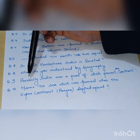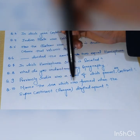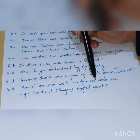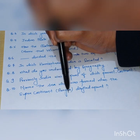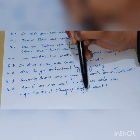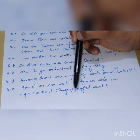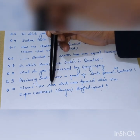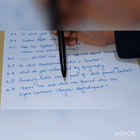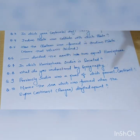Last question: name the sea which was formed when the supercontinent Pangaea drifted apart — when Pangaea divided into two pieces, which sea was formed? Answer is Tethys Sea.